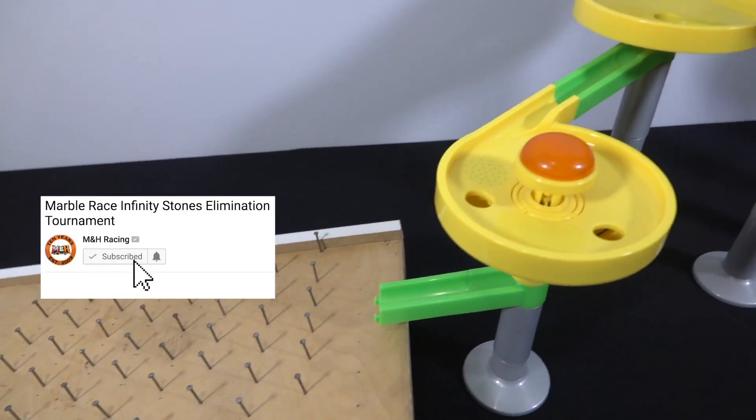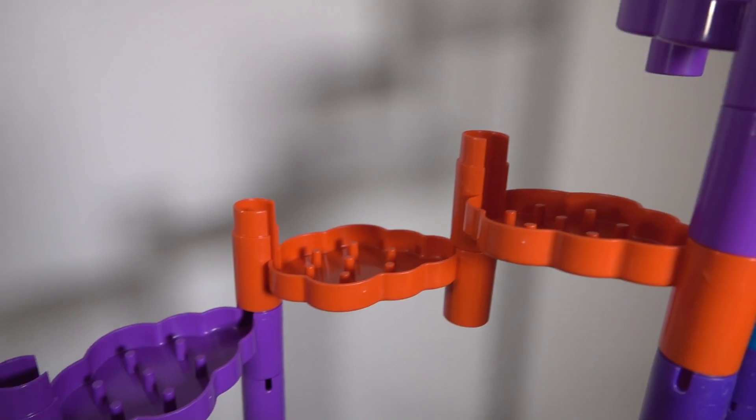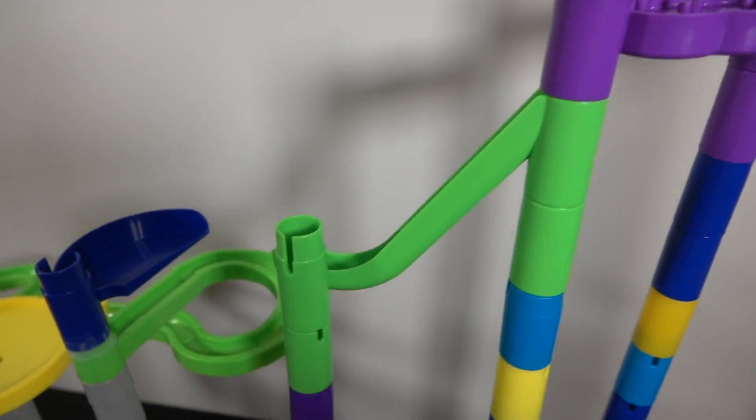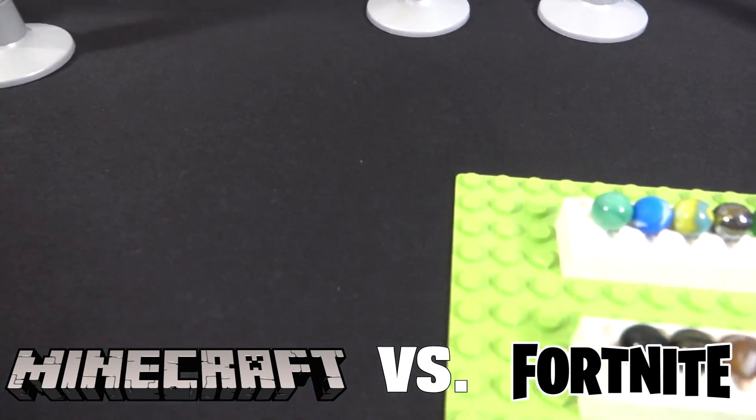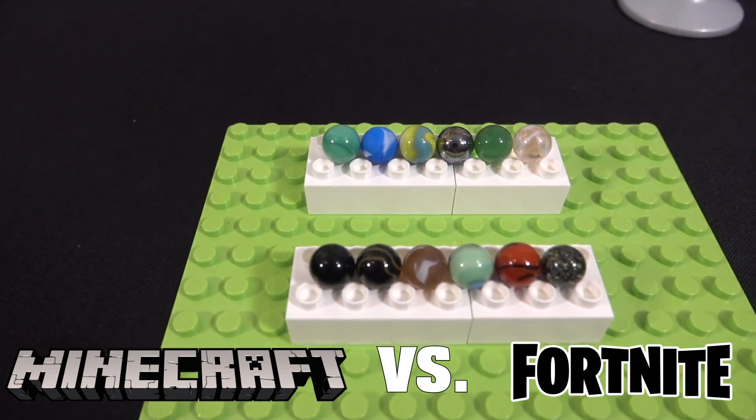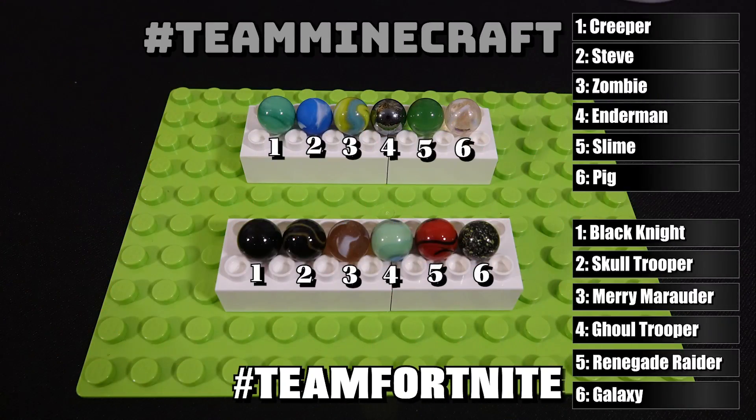Hello ladies and gentlemen and welcome back to another marble race here on M&H Racing. As always I'm your host Alex B, and today we have two teams, each with six marbles representing the two biggest games in this generation. Here are the two teams up close. Show us who you're rooting for by posting down below in the comments.